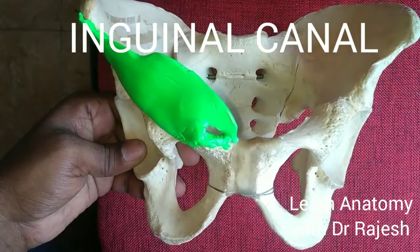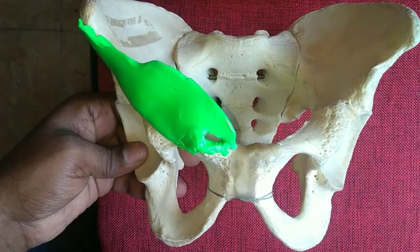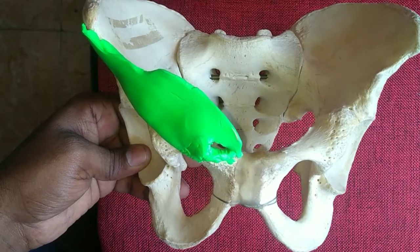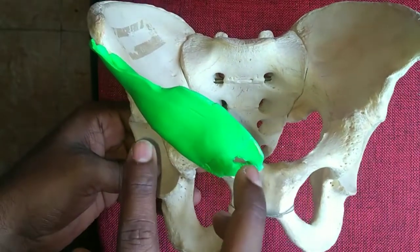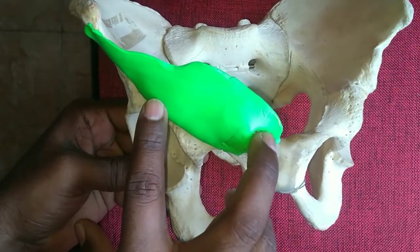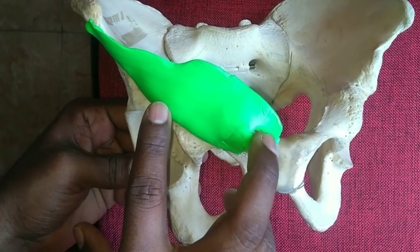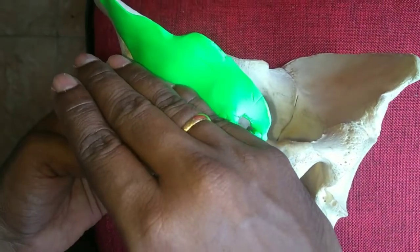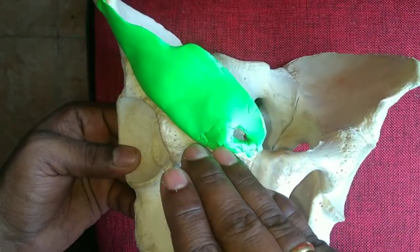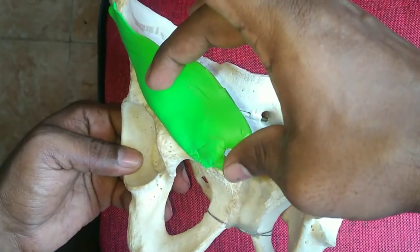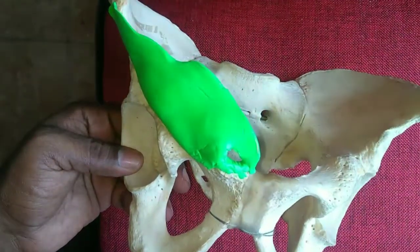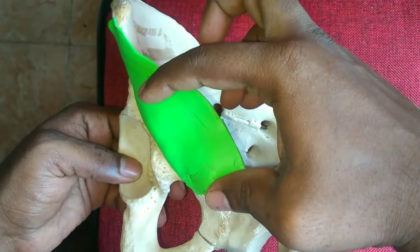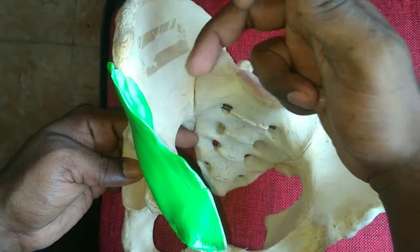Good morning. Today let's study about the inguinal canal. To understand the inguinal canal, first we should know its location. This inguinal canal is located at the lower part of the anterior abdominal wall — you can see this is the pelvis. It is an oblique passage just above the medial half of the inguinal ligament.